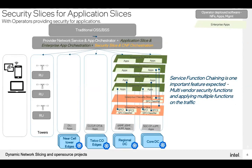When you have applications at edge locations, the natural question is: who is going to handle security? Before, when applications were in the cloud, security was taken care of by companies like Cloudflare or security functions deployed in the cloud itself. But now that applications are deployed at edge locations, security functions must also be available there. This is another opportunity for operators to provide security slices for enterprise applications. Whenever you have security functions, the critical requirement is service function chaining — operators should be able to deploy security functions from different vendors and steer traffic through them in a chain fashion.